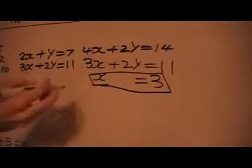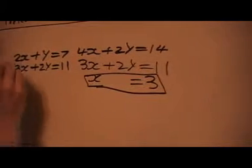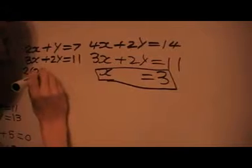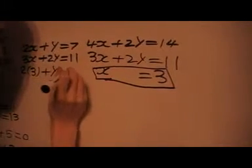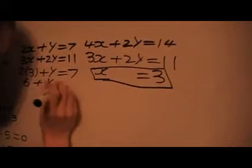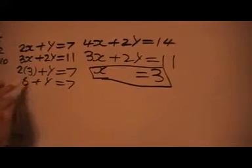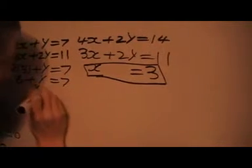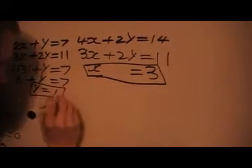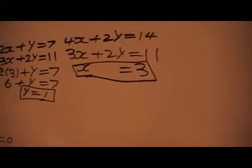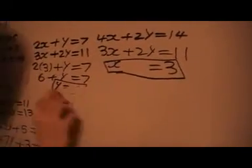So then we can substitute into one of these. So I'll put x equals 3 into this top one here. Let's do that. I could do another one, but I'm going to do the top one. And we'll get 6 plus y equals 7, and then I subtract 6 from both sides and we'll get y equals 1. So these are the solutions, x equals 3 and y equals 1, are going to be the answers to these two equations.